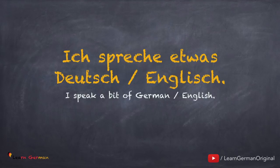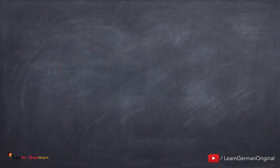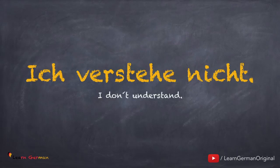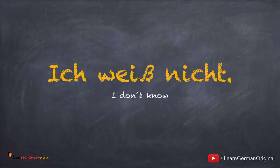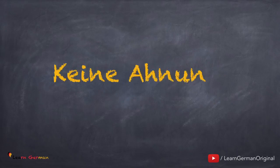As you have already made out from the previous structures, 'Ich' is for 'I'. The next phrase is Ich verstehe nicht. Another one: Ich weiß nicht. Note that the beta symbol has the sound of a double S. As an alternative, you can say, Keine Ahnung.